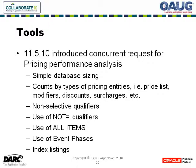The 11.5.10 version introduced a pricing performance analysis concurrent request that gave you some simple metrics on database sizing, counts of use by the different pricing entities — be they price lists or modifiers — and if they're modifiers, whether you have discount lists, surcharge lists, etc.